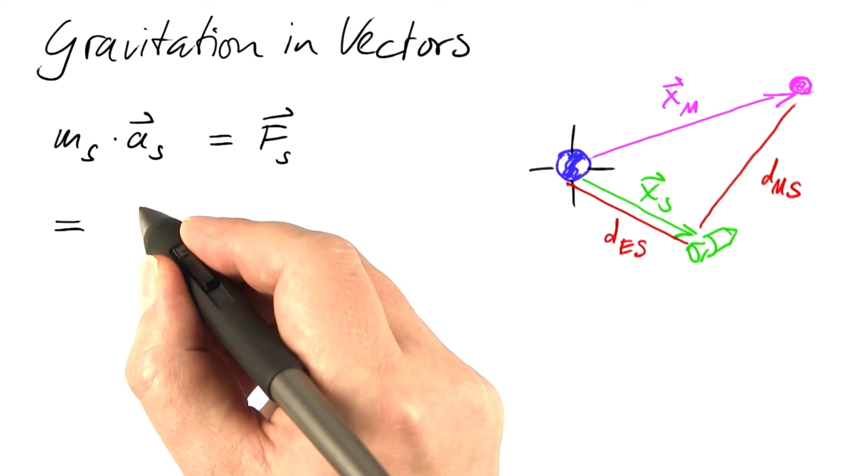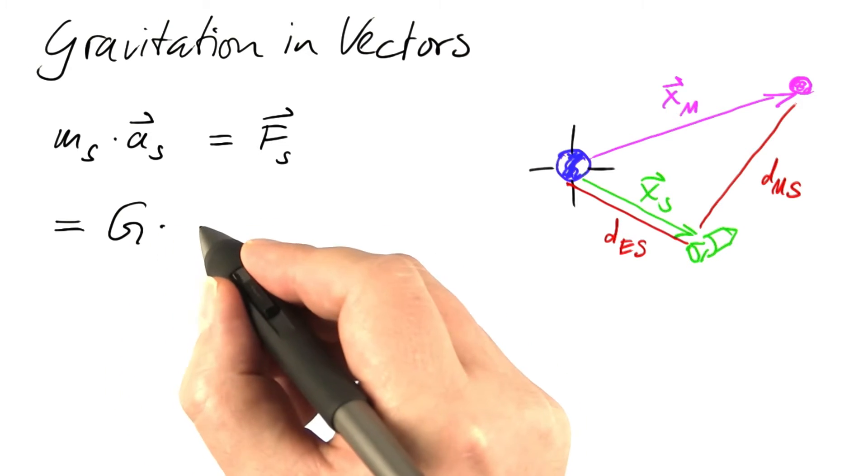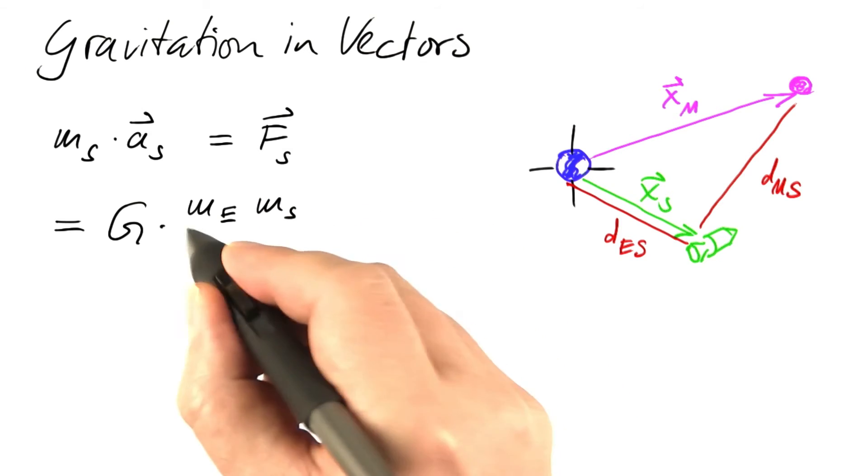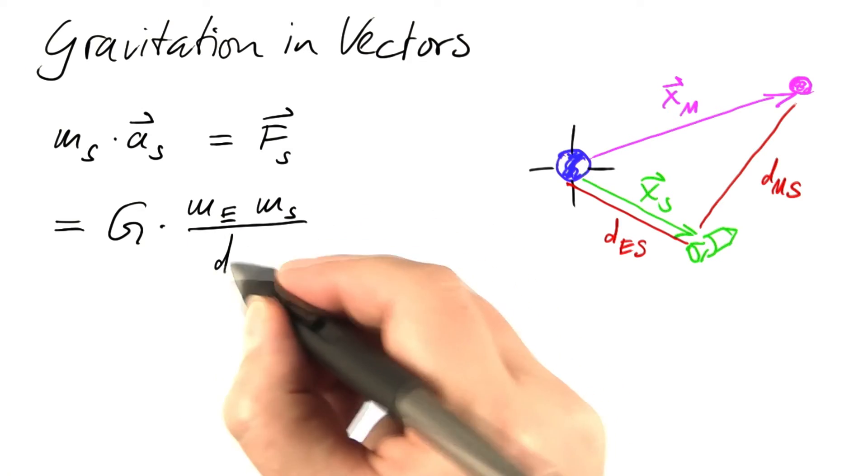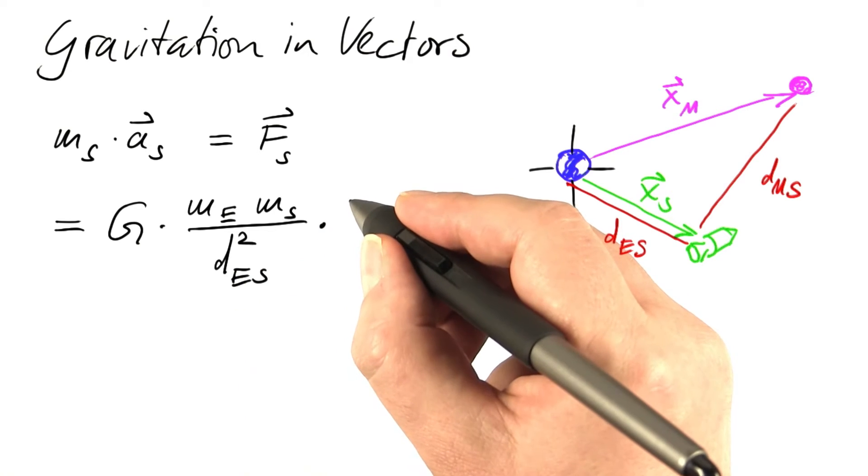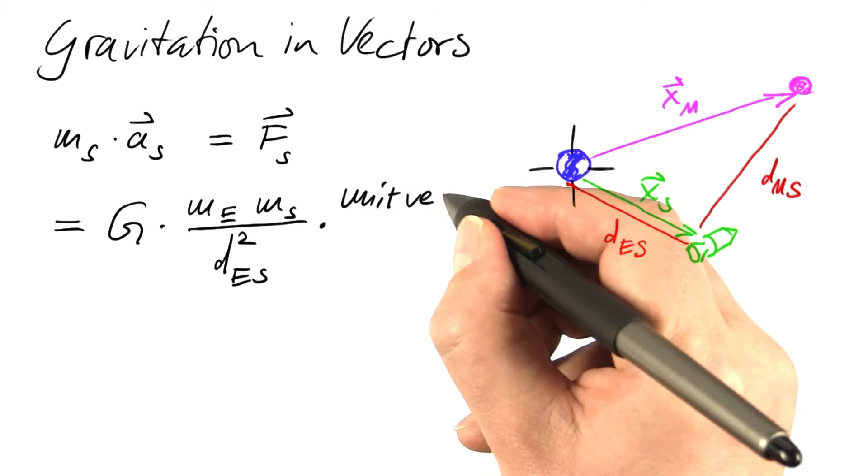So, the force exerted by the earth would be gravitational constant times the mass of the earth times the mass of the spacecraft divided by the distance between them squared times a unit vector, that's vector of length 1, pointing to earth.